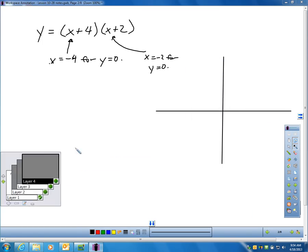The way you graph in intercept form is you ask yourself, what can I do to make my first binomial equal to 0? If you plug in negative 4 for x, that's going to create 0. So, that would give me the point negative 4 for x, 0 for y. At the same time, if I plug in a negative 2 here, I'd get 0 for y. I would then graph those two points.